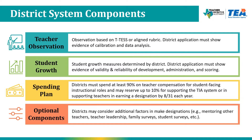The third component is the district spending plan. Districts must spend at least 90% of their allotment on teacher compensation for student-facing instructional roles, and may reserve up to 10% for supporting the TIA system or supporting teachers in earning designations. All funds must be spent by August 31st each year. Lastly, districts may consider adding additional factors to designation decisions, such as mentoring, teacher leadership, or surveys.